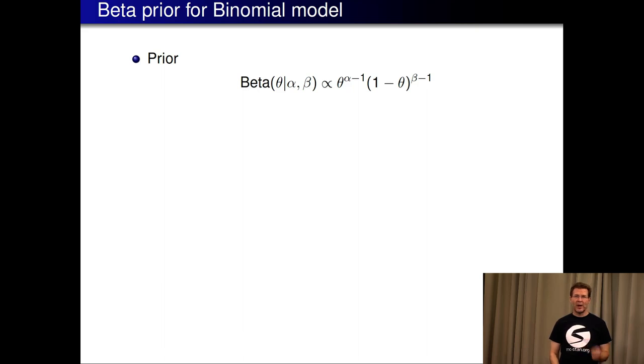So in case of binomial model if the conjugate prior meant that the prior has to be the same form as posterior then we know that the prior has to be beta form.